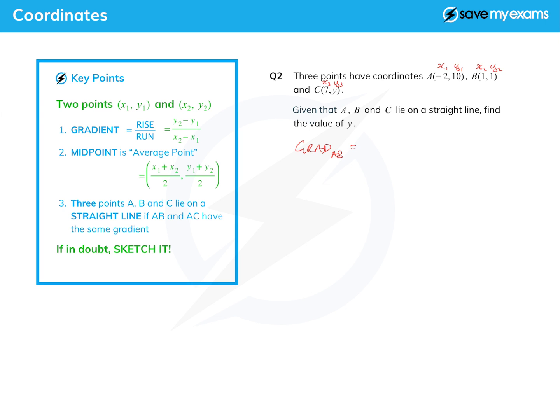The gradient of AB is, again, subtract the y's: 1 minus 10, and subtract the x's: 1 minus -2, making sure we've done it B minus A each time. That is -9 on the top, and again we've got a minus minus, so 1 plus 2 is 3, and -9 over 3 is -3.